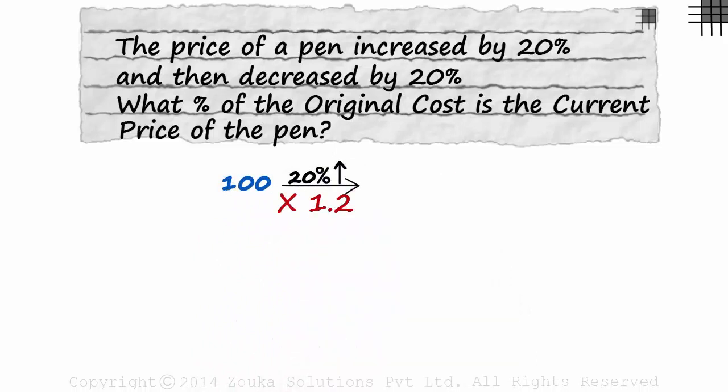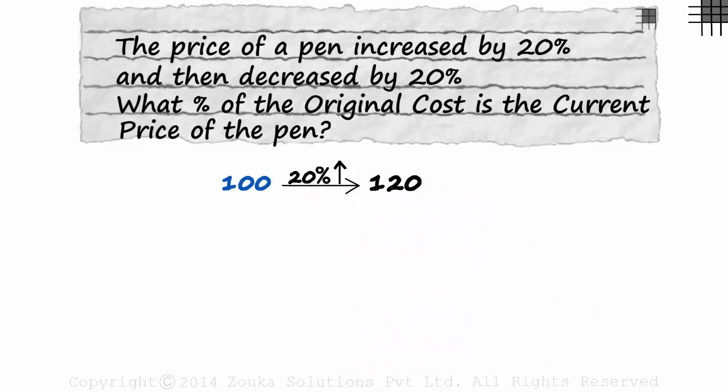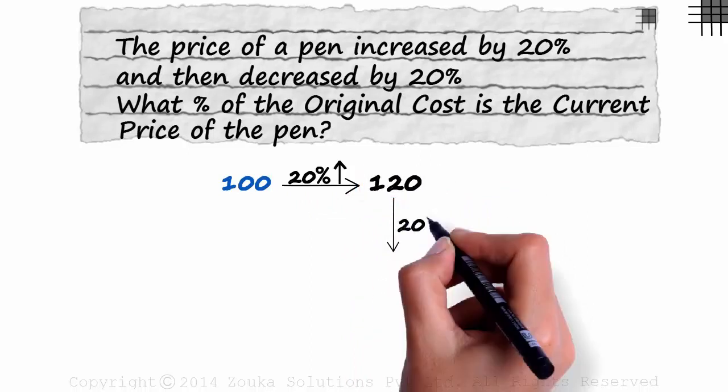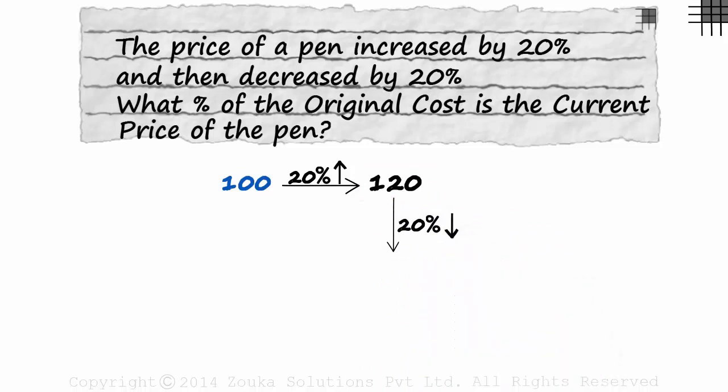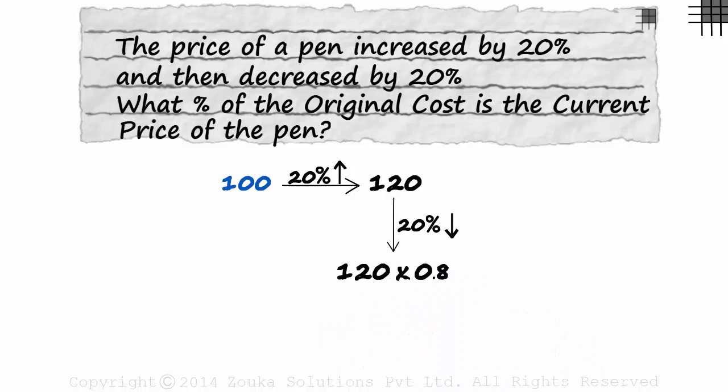1.2 times 100 is 120. And what will happen to 120 when it is decreased by 20%? It will be 120 times 0.8 which equals 96.